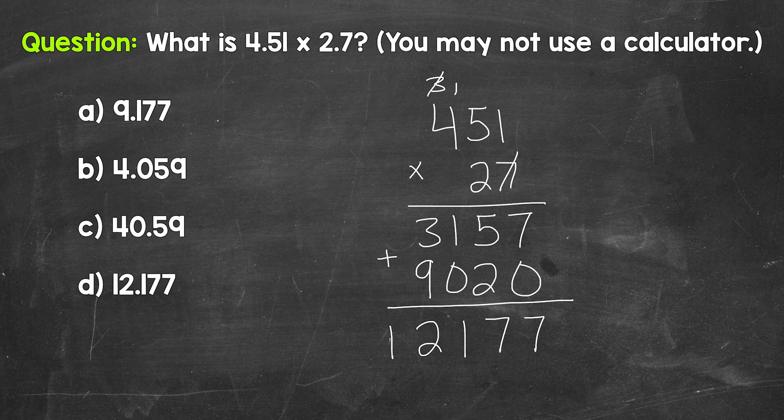But this isn't our final answer. We need to place the decimal in our answer. And we do that by looking back at the original problem and seeing how many decimal digits we have. How many digits are to the right of a decimal?